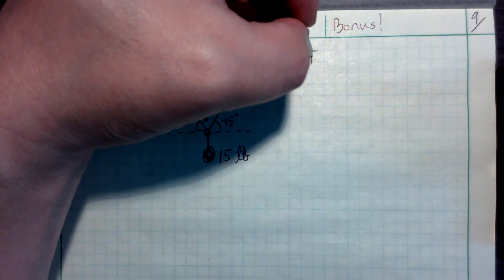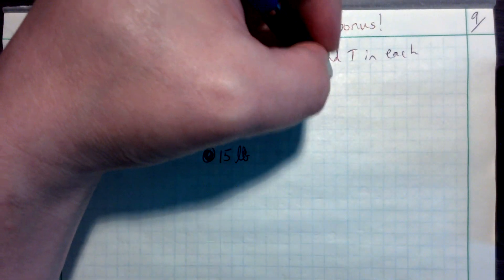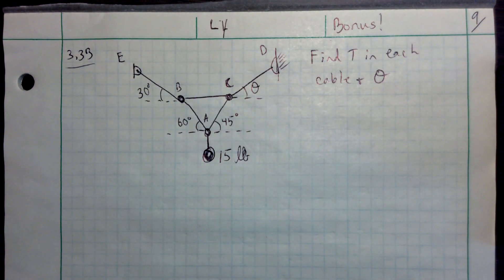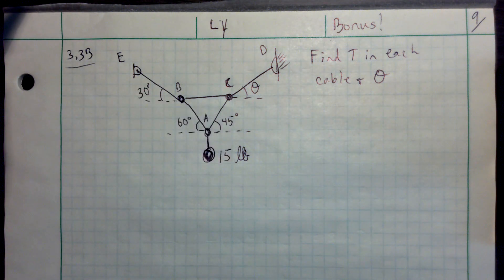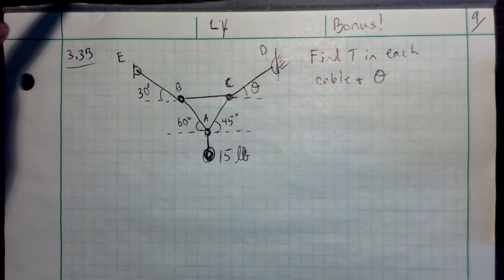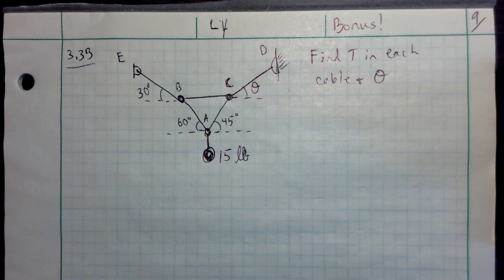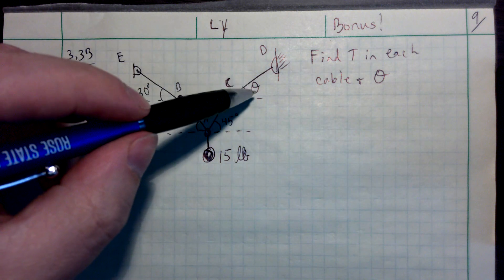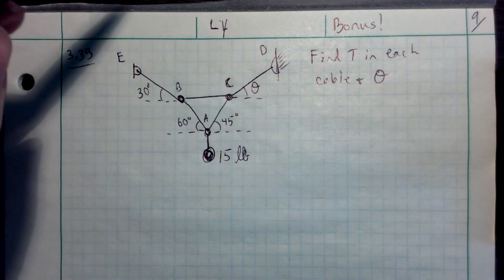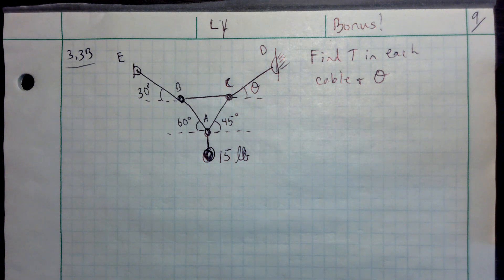The problem says to find the tension in each cable, find the unknown angle theta at connection point D. BC is completely horizontal. When you've got multiple knots or multiple cables, tension will be different in each cable. A free body diagram in 2D can only solve for two unknowns, and I've got five cables plus one unknown angle — six unknowns total — so I'm going to need at least three free body diagrams.